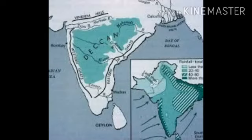The Western Ghats and the Eastern Ghats meet each other at the Nilgiri Hills. Anaimudi Peak in Kerala, at a height of 2,695 meters above sea level, is the highest peak of the Peninsular Plateau. Some of the important rivers in this region are Mahanadi, Godavari, Krishna and Kaveri, which originate from the Western Ghats and flow towards the east to the Bay of Bengal.